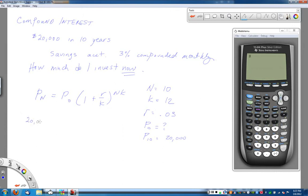Now I have $20,000 equals P0, which I still don't know, times 1 plus R divided by K. Oh, I was subbing numbers in there, wasn't I? My R value is 0.03, and my K value is 12, because I'm compounding monthly. And this is all going to be to the N, which is 10 years later, times my compounding period, which was 12. So this is my new equation.